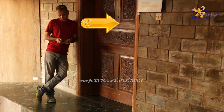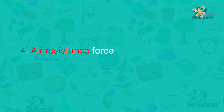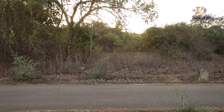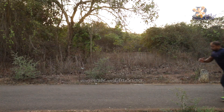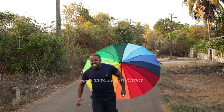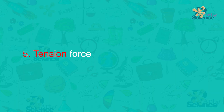Fourth is the air resistance force — a special type of frictional force that acts upon objects as they travel through air. To show this, a person runs with the umbrella closed and then with the umbrella open to increase air resistance. You can see the stress on his face, and if you don't believe it, you can try it yourself.